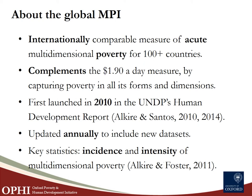In terms of method, the Global MPI is a leading practical application of the multidimensional poverty methodology pioneered by Sabina Alkire and James Foster. Their 2011 seminal paper outlined the Alkire-Foster, or AF, method. The AF method goes beyond simply calculating the percentage of the population who is poor — the incidence of poverty. It also allows us to identify the intensity of deprivation experienced by the poor: the percentage of deprivations suffered by the poor on average. The MPI is calculated by multiplying the incidence by the intensity.